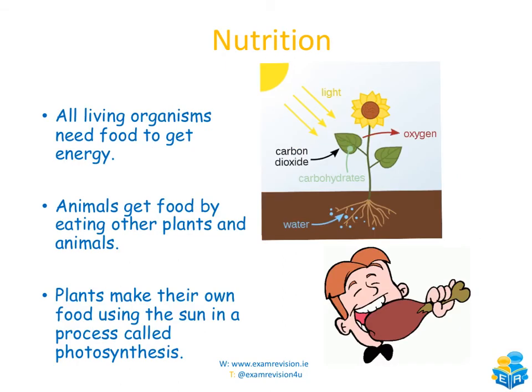The final characteristic is nutrition. All living organisms need food to get energy. Animals get their food by eating other plants and other animals — we can have a plant-based diet or a mixture of plant-based and animal-based. Plants, however, have to make their own food in a process called photosynthesis, where they use sunlight to produce carbohydrates. Plants are autotrophs because they make their own food using the sun.